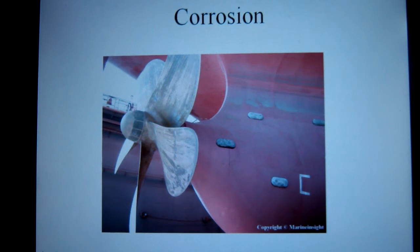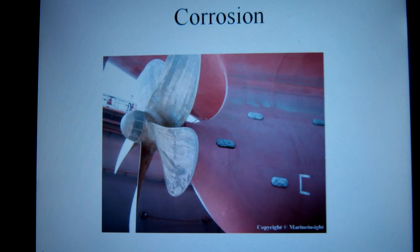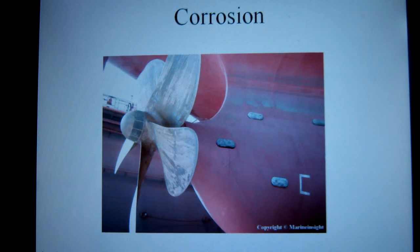Corrosion and its prevention are a very practical application of redox theory. Ships, pipes, and storage tanks are primarily made of steel, and the main component of steel that we'll be concerned with would be iron.